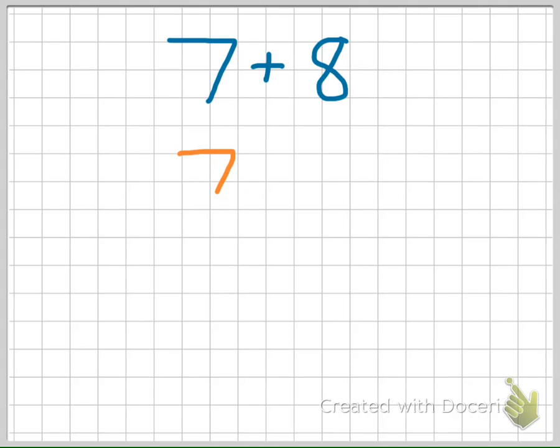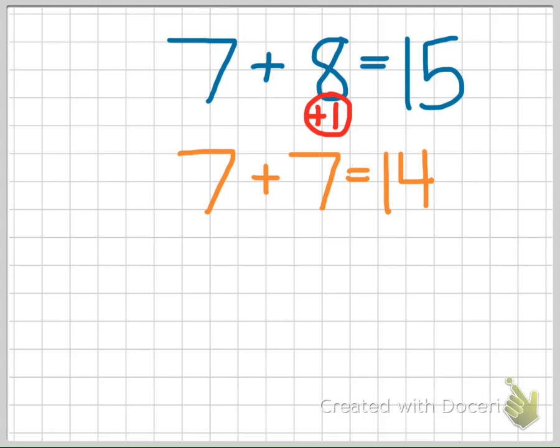The reason this works is because 7 plus 8 is one larger than the two 7's. And so 7 plus 8 is one larger than the doubles fact.